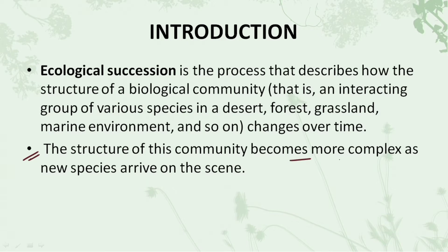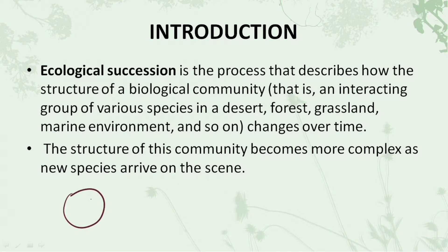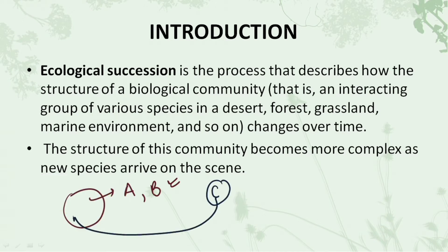The structure of this community becomes more complex as new species arrive. Consider we have a particular area where species A and B are initially present, but now let's assume that species C also comes to live there. As a result of this, the structure of this particular community starts to change, because of the new species coming in and using the resources of that area.